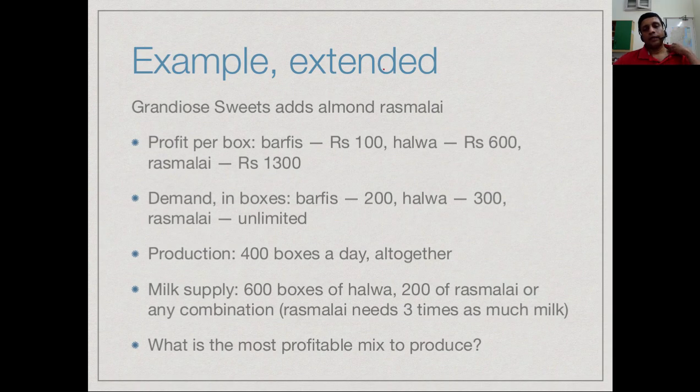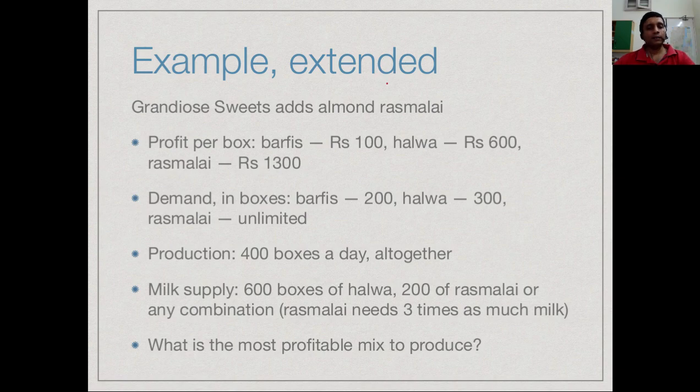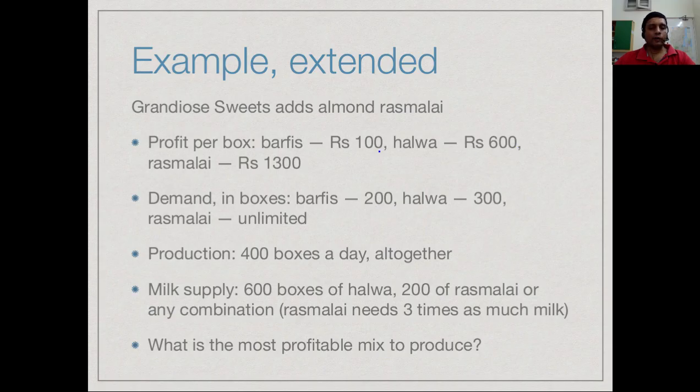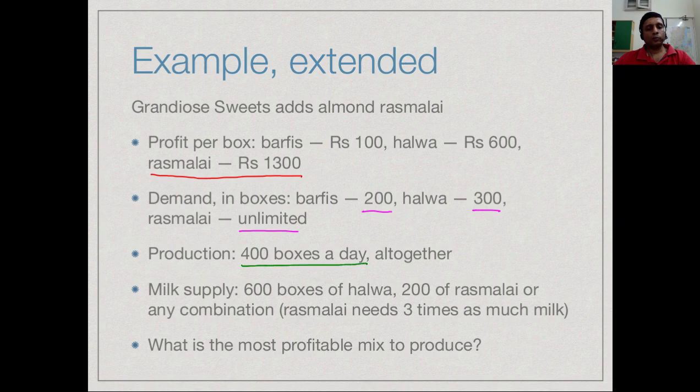Just to get a little bit more practice at this, let us extend the example. Now in addition to our barfi and halwa which had the same details as before - 100 rupee profit for barfis, 600 for halwa - we have added almond rasmalai which gives us a much higher profit of 1300. Almond rasmalai actually people are willing to buy in unlimited quantity, so the earlier demand for barfis and halwa is the same, 200 and 300. But almond rasmalai can be sold in unlimited amounts. Unfortunately, we haven't got any new staff, so we are still restricted to producing a total of 400 boxes.